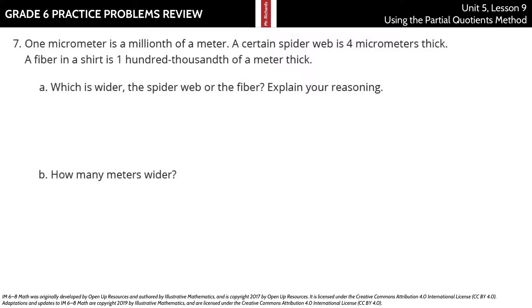One micrometer is a millionth of a meter. A certain spiderweb is 4 micrometers thick. A fiber in a shirt is one-hundred-thousandth of a meter thick. Which is wider, the spiderweb or the fiber, and explain your reasoning. How many meters wider? Let's look at this one-hundred-thousandth of a meter thick. Well, if we have tenths, hundredths, thousandths, ten-thousandths, hundred-thousandths.